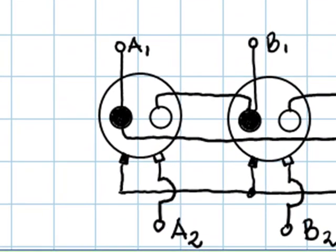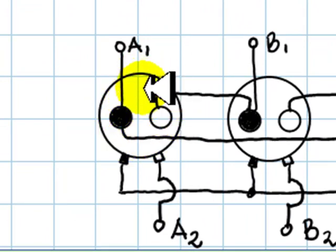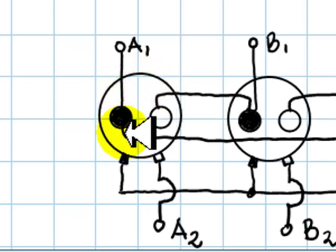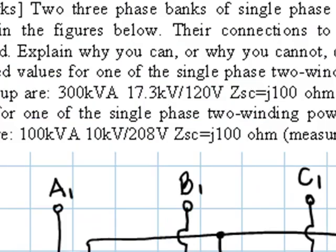For one of the transformers of Group Beta, the ratings are 100 kVA, 10 kV on the primary, 208 volts rated voltage on the secondary, and j100 ohms measured on the high voltage side again.